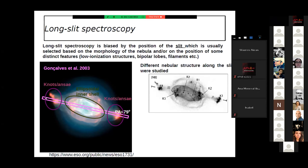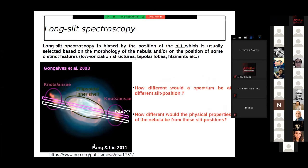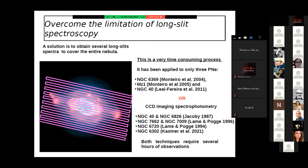Here I show you the slit position from the spectroscopic study from Gonsalves 2003 along the major axis of the ellipsoidal shell covering the ansae or knots. A few years later, we have another spectroscopic study from Fang-Liu and they decided to get a slit position at the same position angle. So the question is: how different would the spectra be at different slit positions, or how different would the physical properties be at different slit positions, not only parallel but at different position angles?